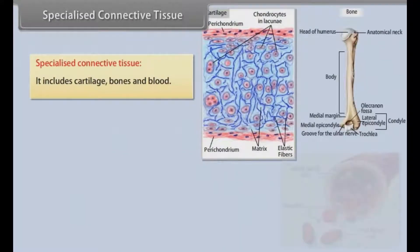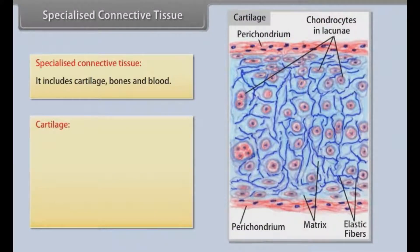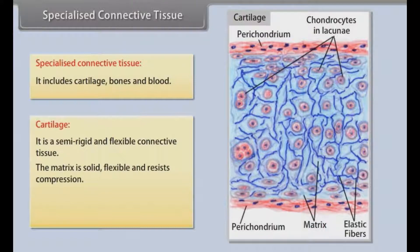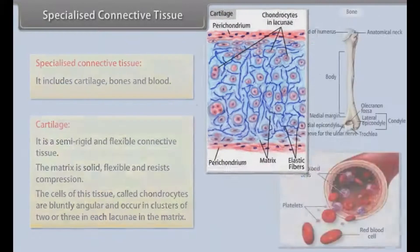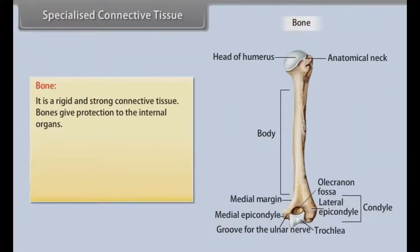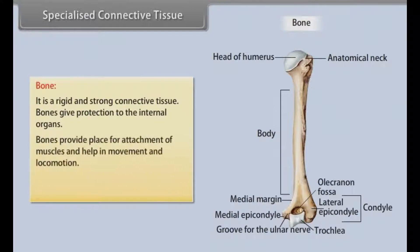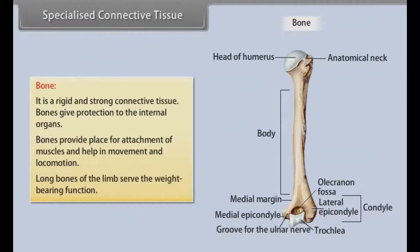Specialized connective tissue includes cartilage, bones, and blood. Cartilage is a semi-rigid and flexible connective tissue; its matrix is solid, flexible, and resists compression. The cells of this tissue, called chondrocytes, are bluntly angular and occur in clusters of 2 or 3 in each lacunae in the matrix. Bone is a rigid and strong connective tissue that gives protection to internal organs, provides a place for attachment of muscles, and helps in movement and locomotion. Long bones of the limb serve the weight-bearing function.